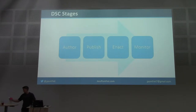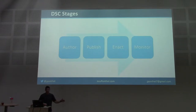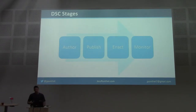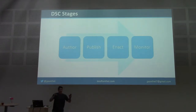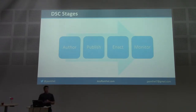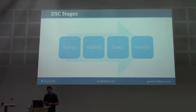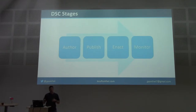There are really four stages to DSC. First, we write our configuration — what is our desired state, what do we want it to look like? Once we have that document, we push it out to our target nodes and it gets enacted — the 'make it so' phase. Once our servers are in desired state, we monitor them and look for any configuration drift: is it still how we wanted it to be configured or has anything changed? The monitoring piece is definitely the weakest point of the technology right now, and it is always changing so hopefully that will improve.